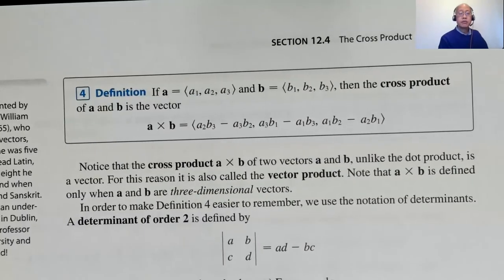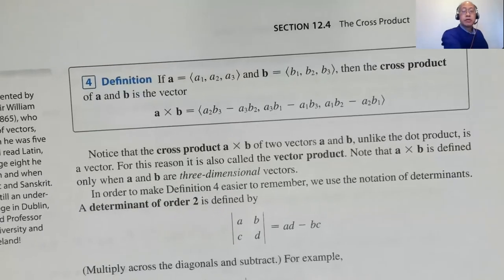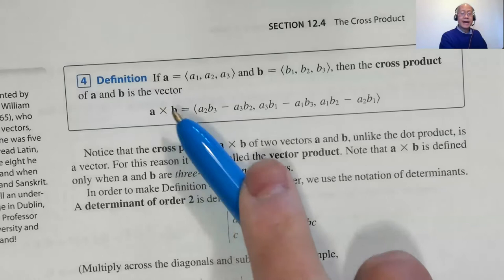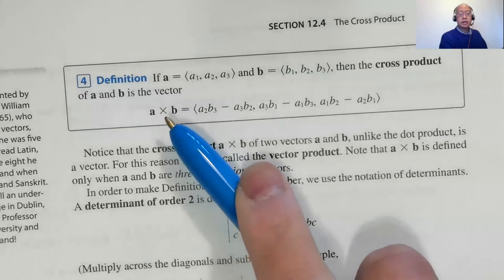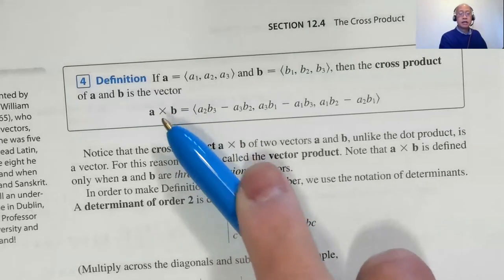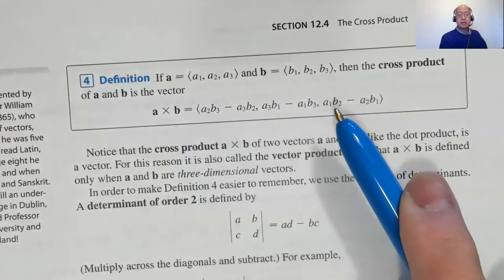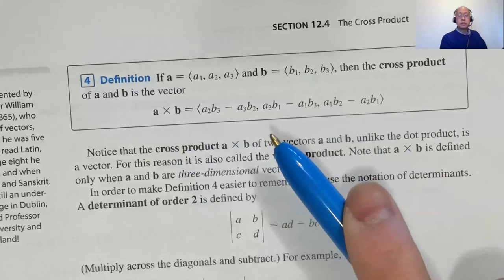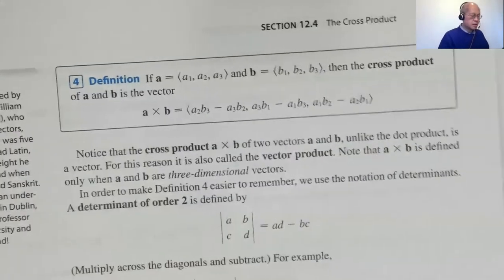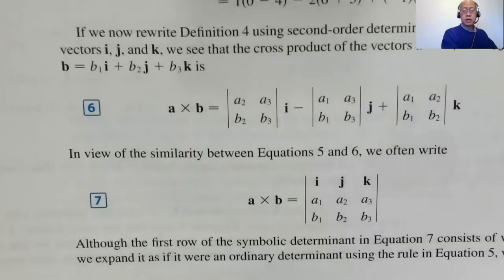If A is (a1, a2, a3) and B is (b1, b2, b3), the cross product A cross B uses an 'x' symbol — like multiplication. We had dot product with a dot; cross product uses that symbol. I'm not going to talk much about the definition given here because this is not the version I want you to use. The version I want you to use is number seven.